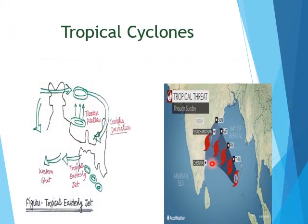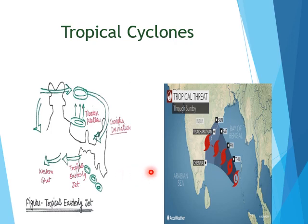Easterly jet streams are responsible for tropical cyclones in India. During October and November, due to the difference in temperature and pressure between land and sea, whenever they occur, they cause great loss of life and property due to heavy rain on the eastern coastal regions of India.